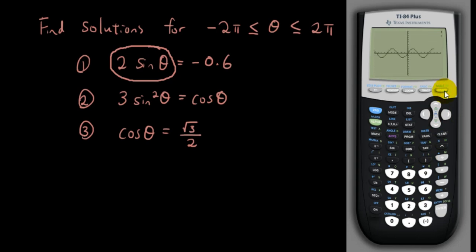Yep, you can see it. Okay, so now what I want you to type in is go back to y equals and now I'm going to put in y2 equals negative 0.6, and I want you to graph it again.